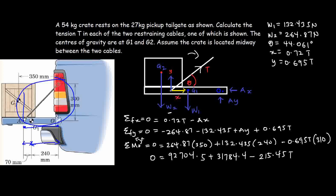Looking at our equations: the first equation has two unknowns, the second also has two unknowns, but the third equation — the moment equation — has only one unknown, T. So we can solve the third equation directly.